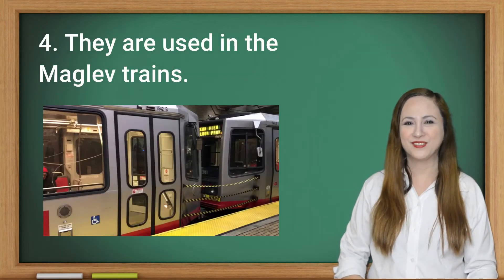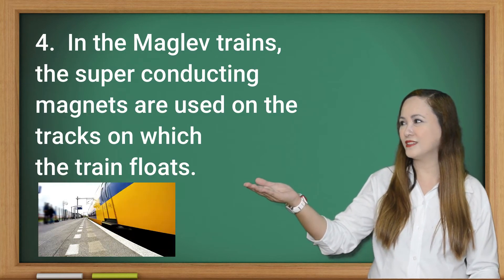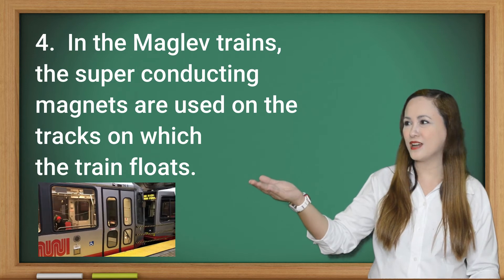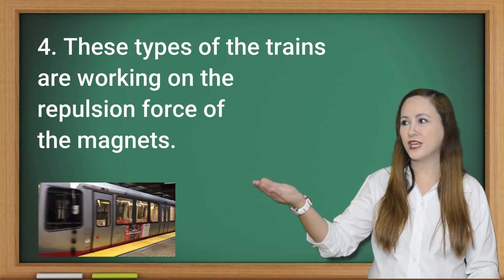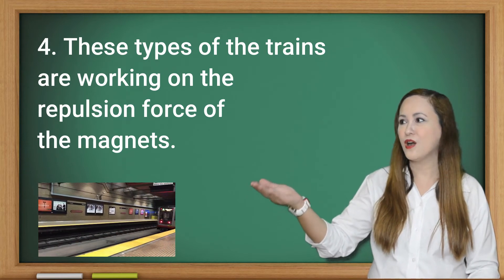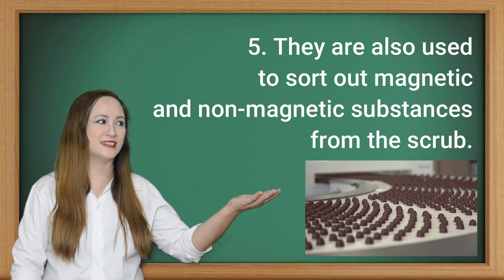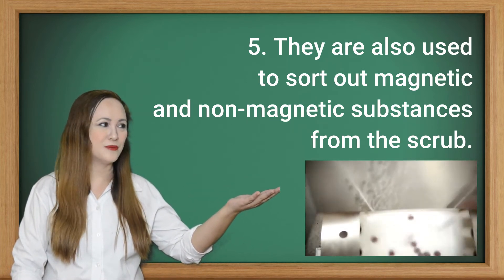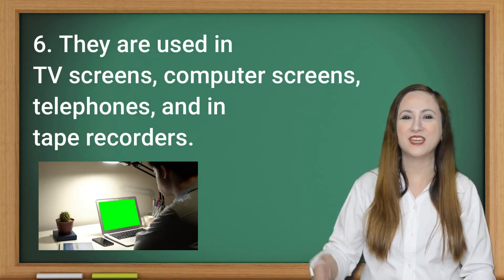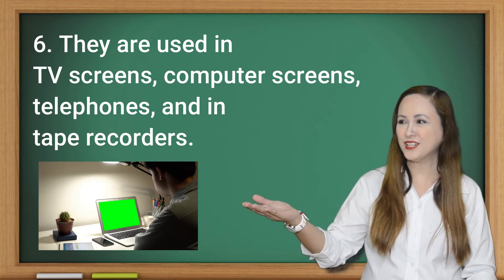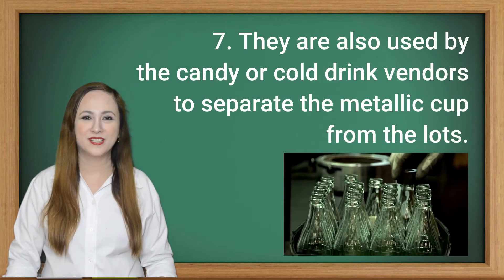Number four, they are used in maglev trains. In maglev trains, superconducting magnets are used on the tracks on which the train floats. These types of trains work on the repulsion force of magnets. Number five, they are also used to sort out magnetic and non-magnetic substances from scrap. Number six, they are used in TV screens, computer screens, telephones, and tape recorders.